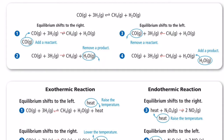All right, welcome back. We're going to continue with our discussion of Le Chatelier's principle and work through several examples. At the end of the video, I'll do a couple of demonstrations to hopefully illustrate this better. Let's take this reaction where carbon monoxide reacts with hydrogen gas to produce methane and water vapor, and let's do a few things by changing the amount of reactant and product.